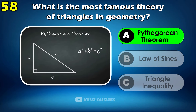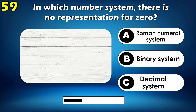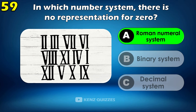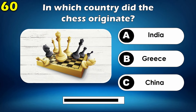In which number system is there no representation for zero? The Roman numeral system. In which country did chess originate? India.